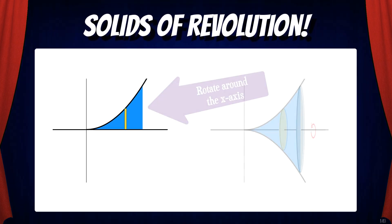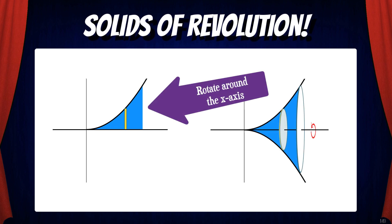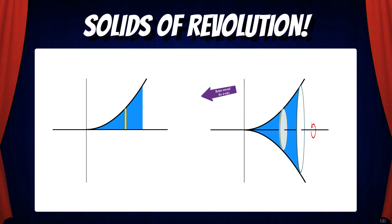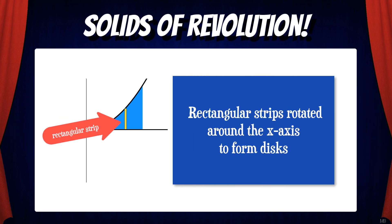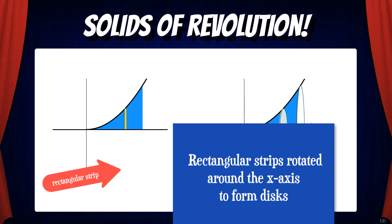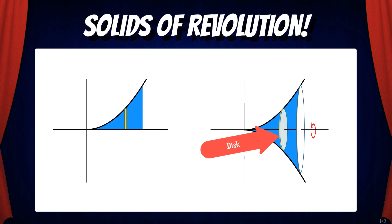Here's the big idea. We can take an area under a curve and rotate that around the x-axis. This will form a solid of revolution. If we want to find the volume of that solid, we need to look at this from the perspective of little rectangular strips that have been rotated around the x-axis to form disks.